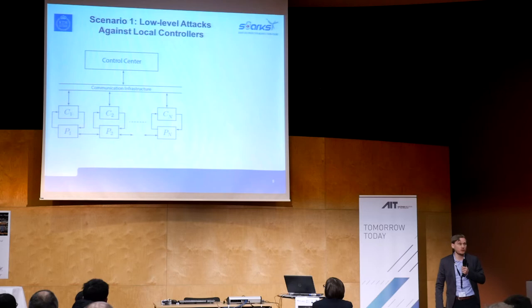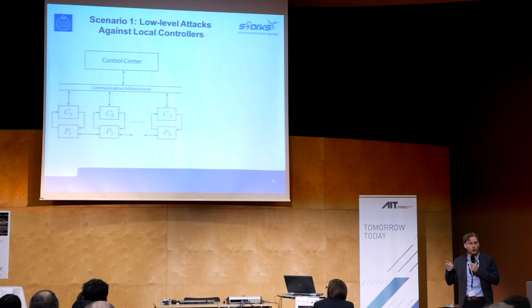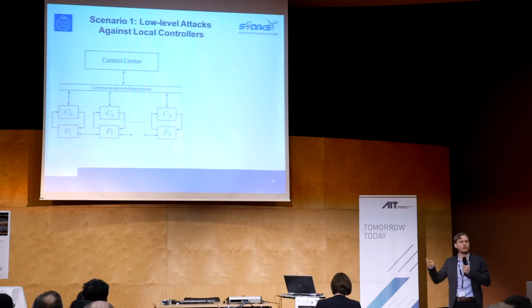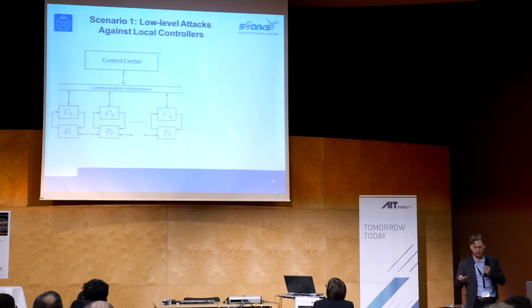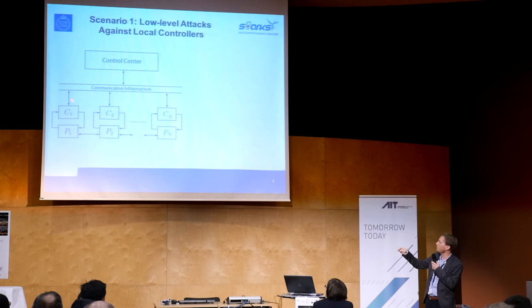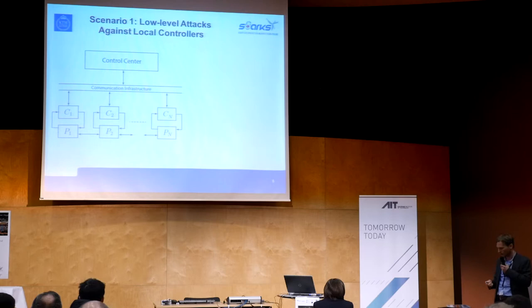Let's jump into the first scenario, which is low-level attacks. Both scenarios use this block diagram as an overview. We have a physical system on the low level that we would like to control — it's a distributed physical system. It could be a power grid or a temperature control system. The main point is that there is a physical interaction between these local plants. There are local controllers — PLCs or RTUs — communicating over a SCADA system to a control center. That's the general topology: a hierarchical control system for critical infrastructure.